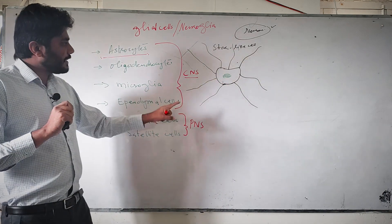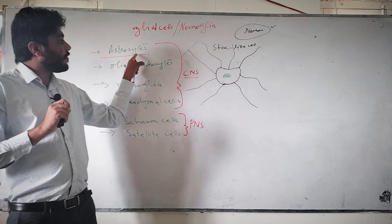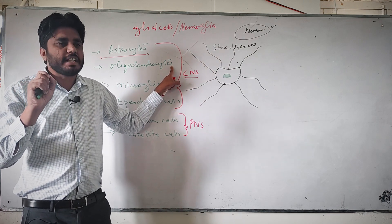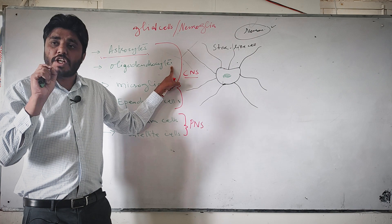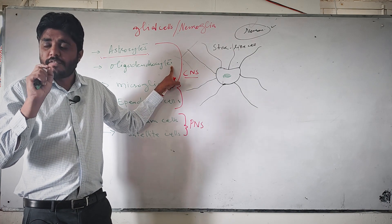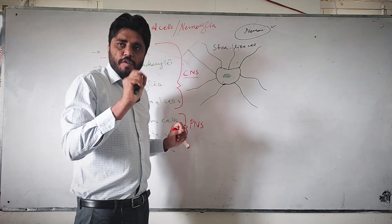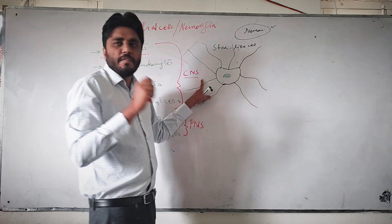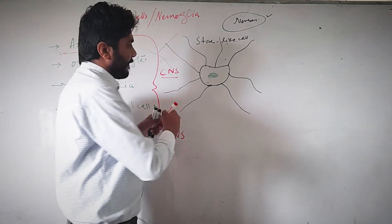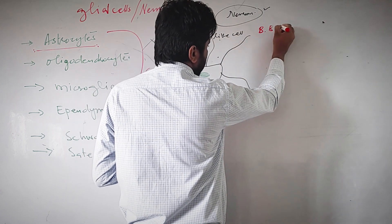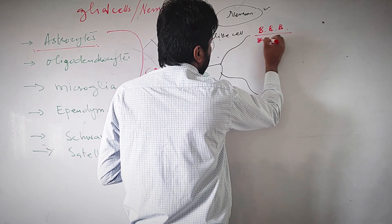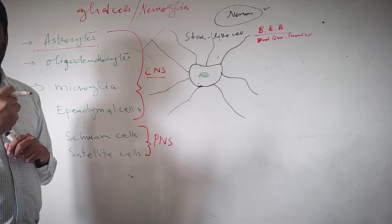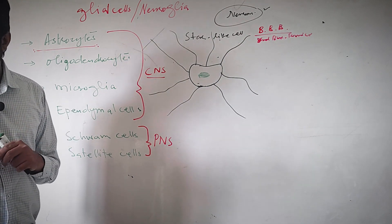Now let's look into the functions of astrocytes. There are many functions associated with astrocytes and research is still ongoing to discover more. Number one, they are involved in the formation of the blood-brain barrier (BBB). To understand how astrocytes are involved in the blood-brain barrier, you need to understand what the blood-brain barrier actually is.